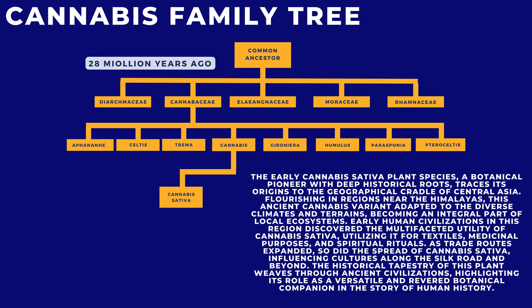The early Cannabis sativa plant species, a botanical pioneer with deep historical roots, traces its origins to the geographical cradle of Central Asia. Flourishing in regions near the Himalayas, this ancient cannabis variant adapted to the diverse climates and terrains, becoming an integral part of local ecosystems.